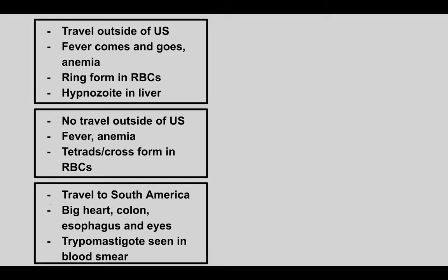The next patient has a history of travel outside of the US, a fever that comes and goes, anemia, ring forms in red blood cells, and hypnozoites in the liver. This is Plasmodium vivax and ovale — a malaria infection by these subtypes. Vivax and ovale can form a latent infection in the liver, so it's essential to treat with chloroquine and primaquine to prevent recurrence.